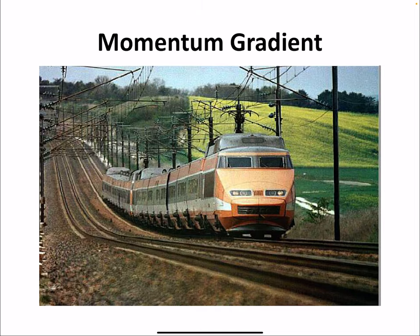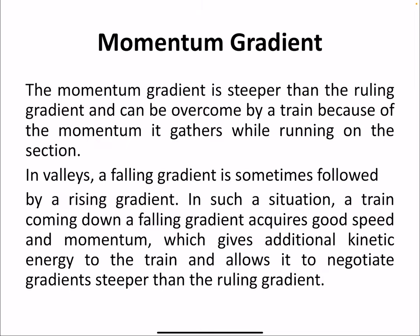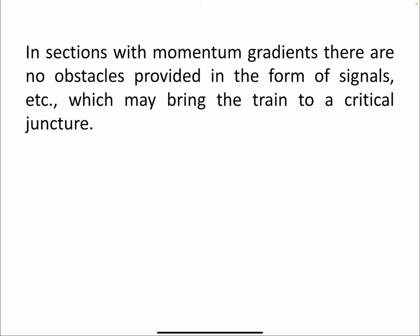The next type is the momentum gradient. The momentum gradient is steeper than the ruling gradient and can be overcome by a train because of the momentum it gathers while running on the section. In some cases, in valleys, a falling gradient is followed by a rising gradient. A train coming down a falling gradient acquires good speed and momentum, giving additional kinetic energy that allows it to negotiate gradients steeper than the ruling gradient. In sections with momentum gradients, there are no obstacles like signals that may bring the train to a halt.